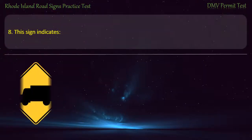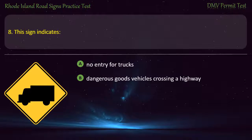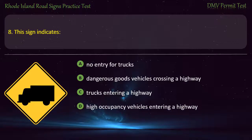Question 8. This sign indicates: no entry for trucks; dangerous goods vehicles crossing a highway; trucks entering a highway; high occupancy vehicles entering a highway. Answer: Trucks entering a highway.